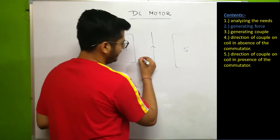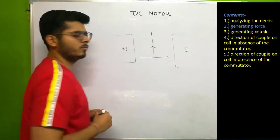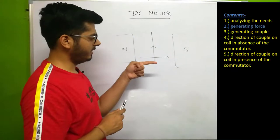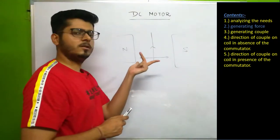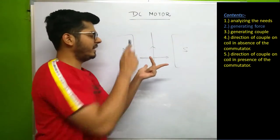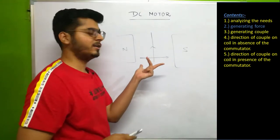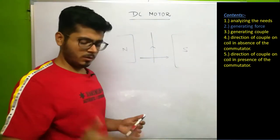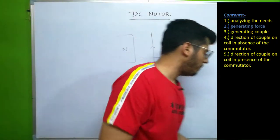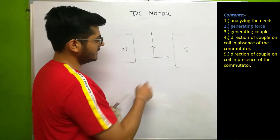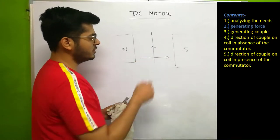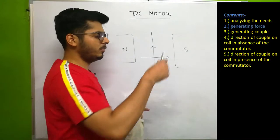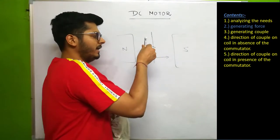The magnetic field direction is from north to south. Current is upward — applying Fleming's left-hand rule: first magnetic field, then current — the force acts in the downward direction on this conductor. By utilizing this property and changing the shape of this body, because here only one force is acting downward, and a single force will not rotate a body, we need to create a couple.